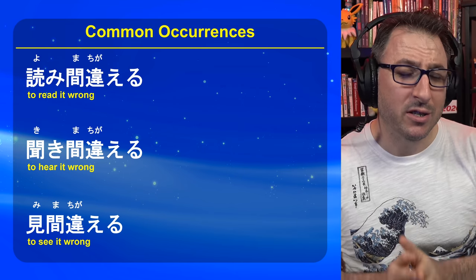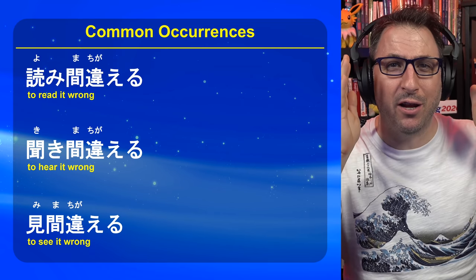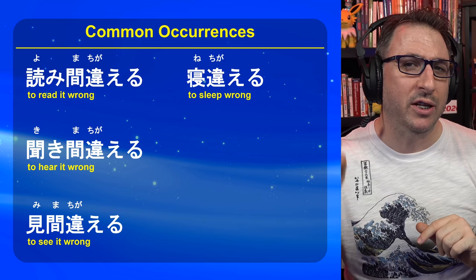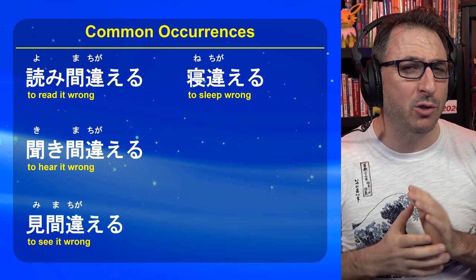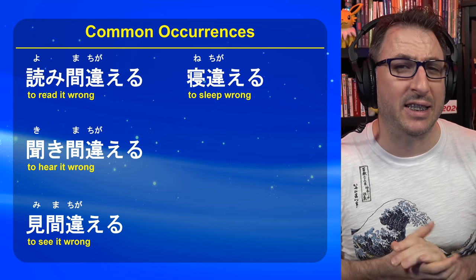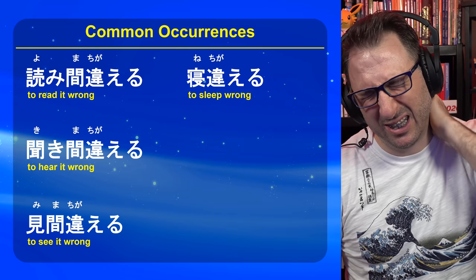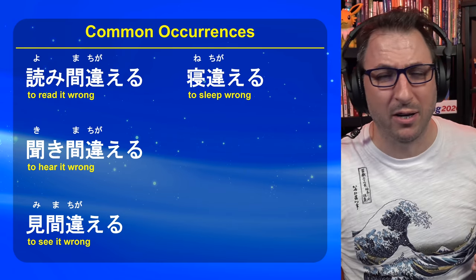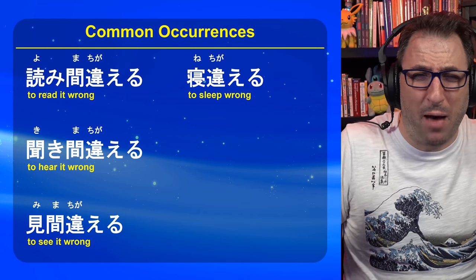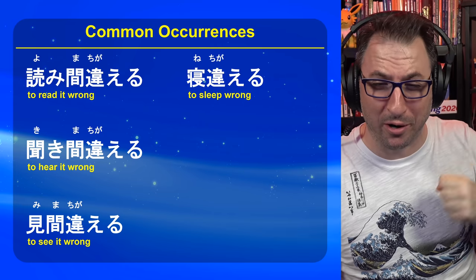Then we've got 見間違える — this is to see something wrong. You looked at it and you saw it wrong, not exactly what it should have been. Now jumping into the 違える one: 寝違える means to sleep wrong — you sleep in a wrong position and mess up your neck or back. Normally if someone says 寝違えた, it means they hurt their neck or their back. It used to happen to me a lot, but now that I've strengthened my core, it doesn't.